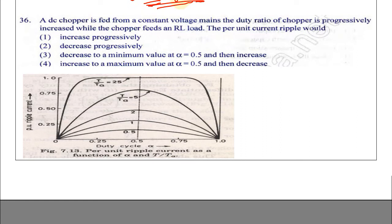Next question: A chopper is fed from a constant voltage. The duty ratio of the chopper is progressively increased while the chopper feeds an R-L load. The per unit ripple current would be - this is the graph I got from the power electronics textbook which shows the per unit ripple current as a function of T_on by T.